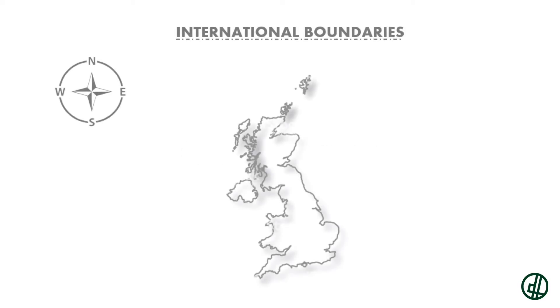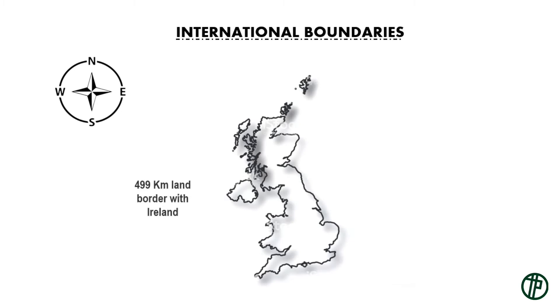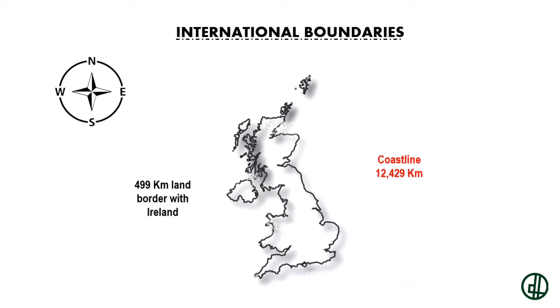Geography. International Boundaries. The UK has a 499 km land border with Ireland, and a coastline of 12,429 km.